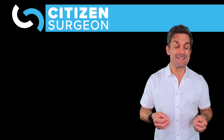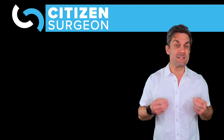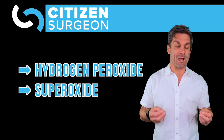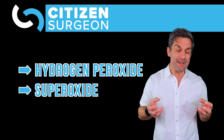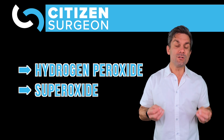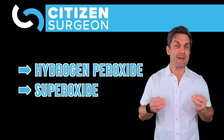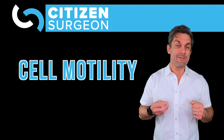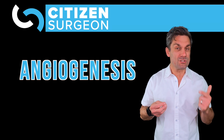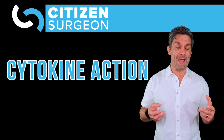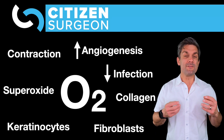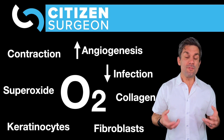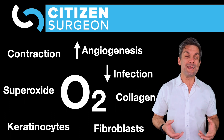There are two major reactive oxygen species: hydrogen peroxide (H2O2) and superoxide. Not only do these limit infection, they also stimulate almost all aspects of wound healing — they stimulate cell motility, angiogenesis, and cytokine action. We need these initially, but if reactive oxygen species continue, that can actually lead to tissue damage.